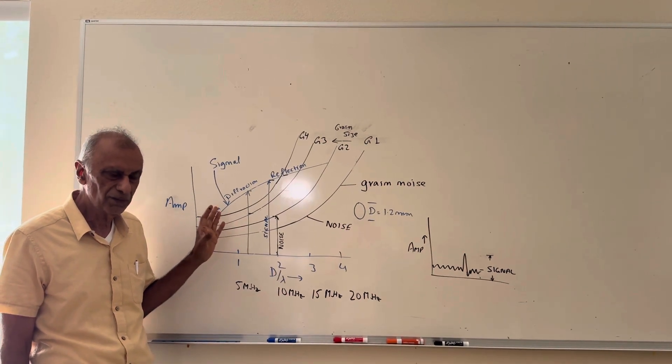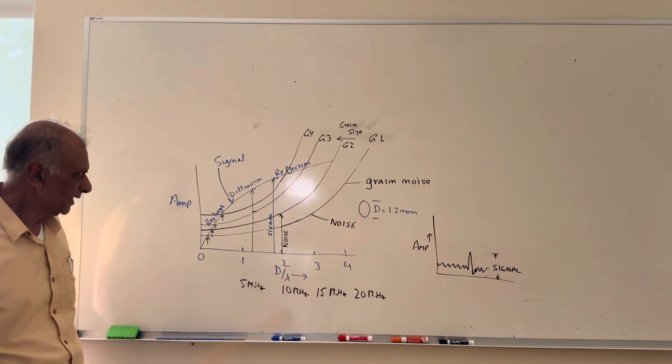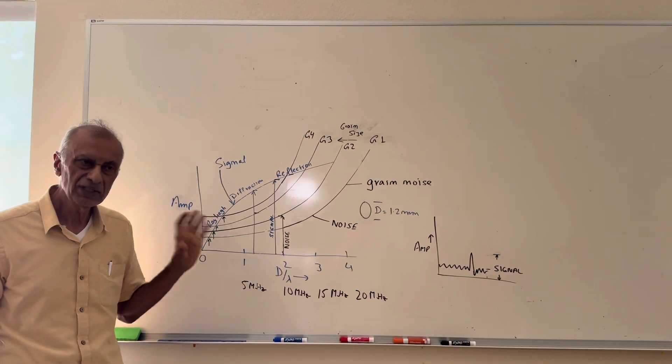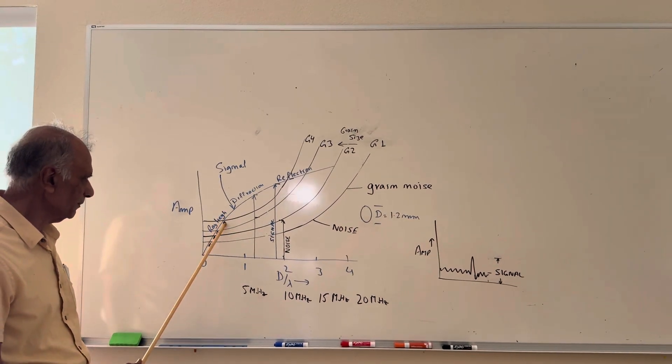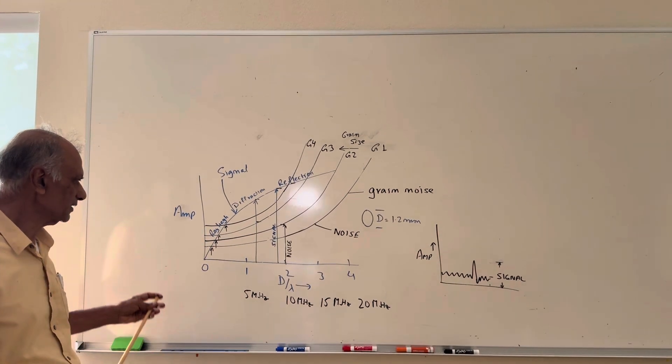So there is actually a sweet range in which we can actually detect the flaws, and that would be a minimum to the maximum. So how is the minimum and the maximum determined?